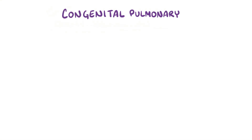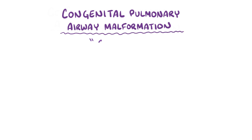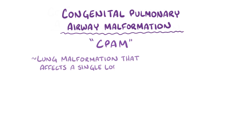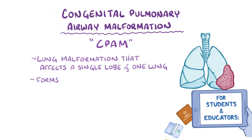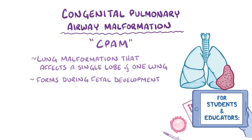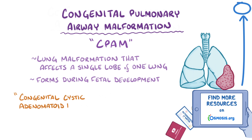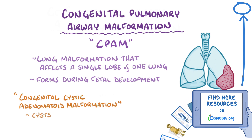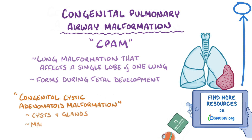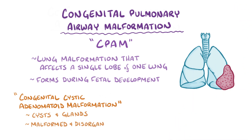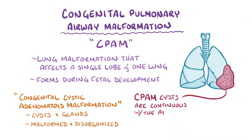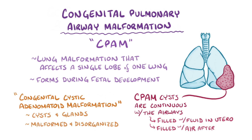A congenital pulmonary airway malformation, abbreviated CPAM, is a lung malformation that usually affects a single lobe of one of the lungs and forms during fetal development. The old name for CPAMs was congenital cystic adenomatoid malformation because they have both cysts and glands in them, but are terribly malformed and disorganized. CPAM cysts are continuous with the airways, so they're filled with fluid in utero and become filled with air after birth.